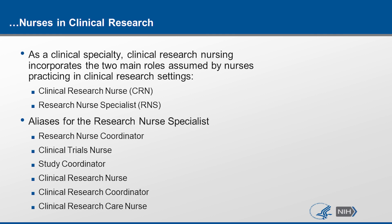As a clinical specialty, clinical research nursing incorporates two main roles: the clinical research nurse, also known as a CRN, and the research nurse specialist, RNS. Some aliases for the research nurse specialist include research nurse coordinator, clinical trials nurse, study coordinator, clinical research nurse, clinical research coordinator, and clinical research care nurse. There are some study coordinators that are not research nurses. This presentation is specifically focusing on clinical research nurses.